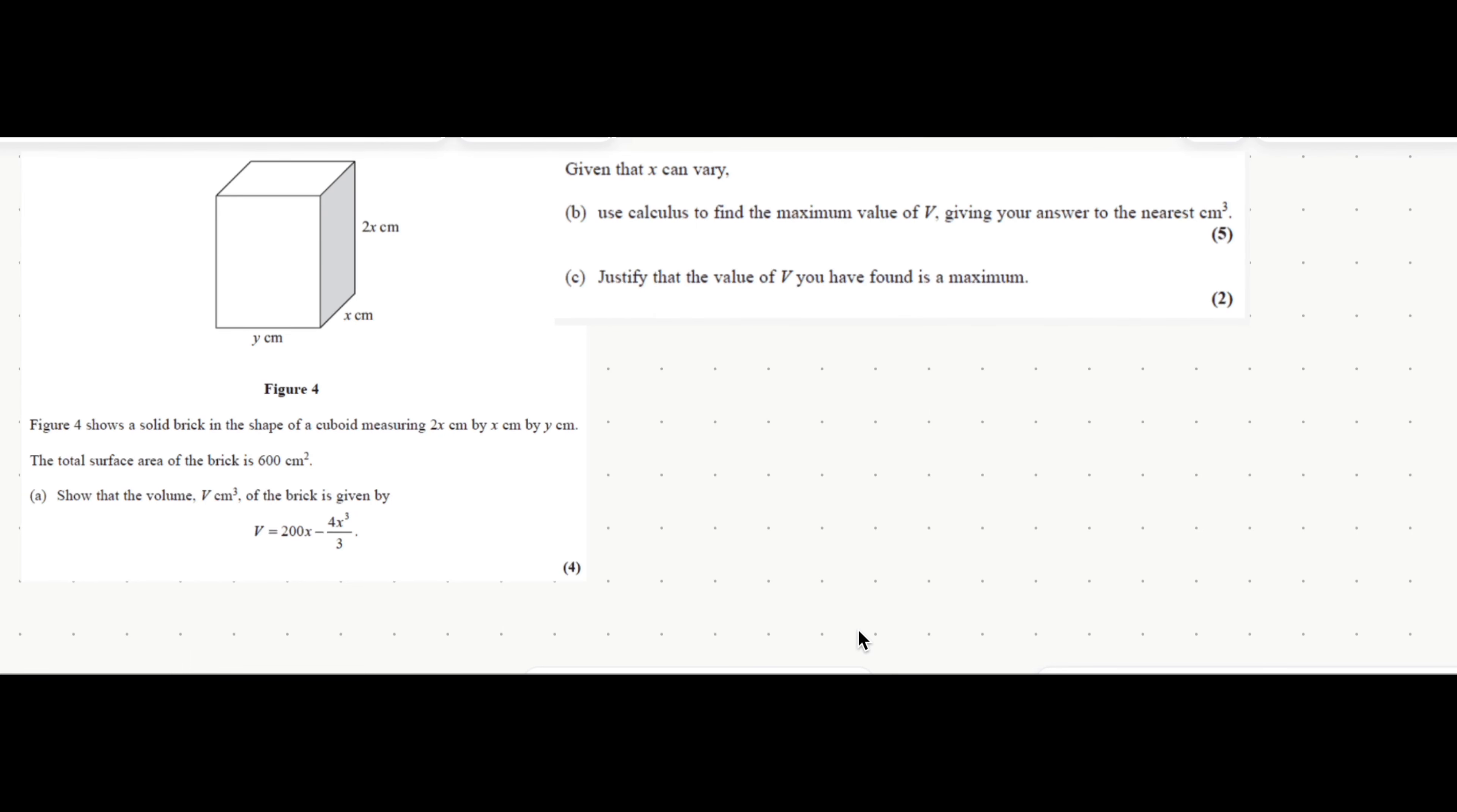In this question we're going to have a look at a pretty difficult question on optimization that uses differentiation. It's given you a cuboid. For this you do need to know that the volume of a cuboid is the length multiplied by the width multiplied by the height.